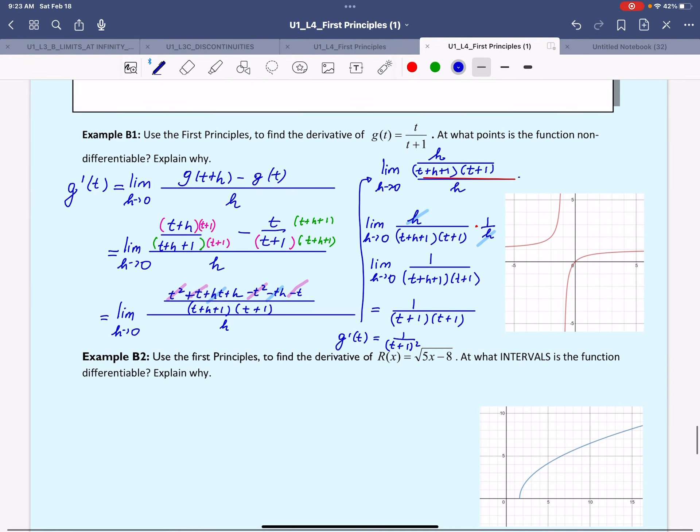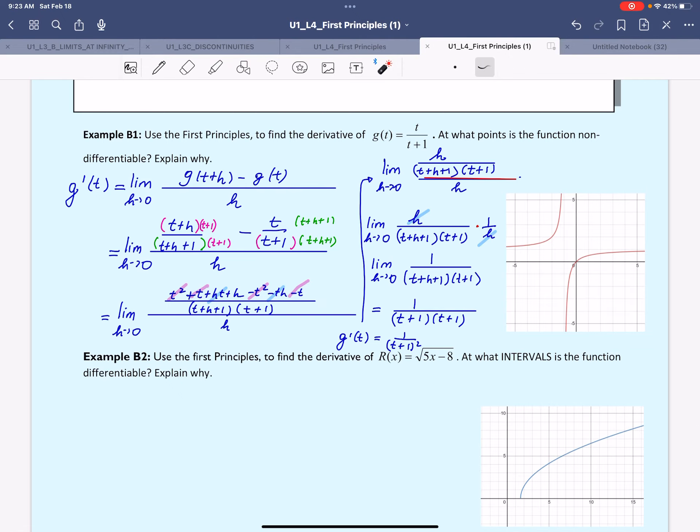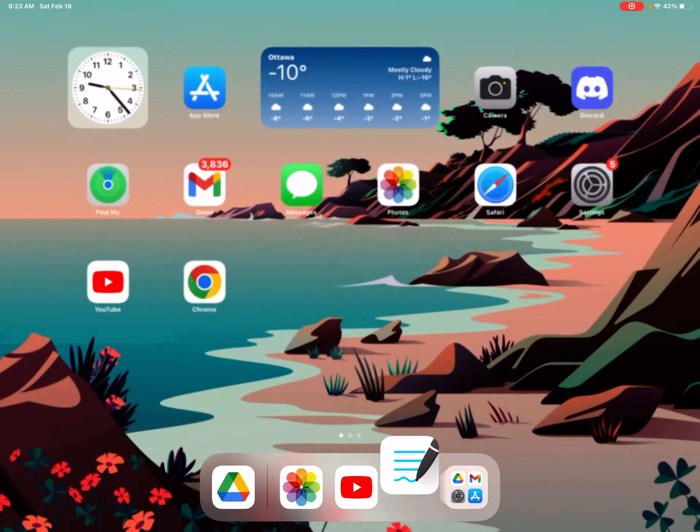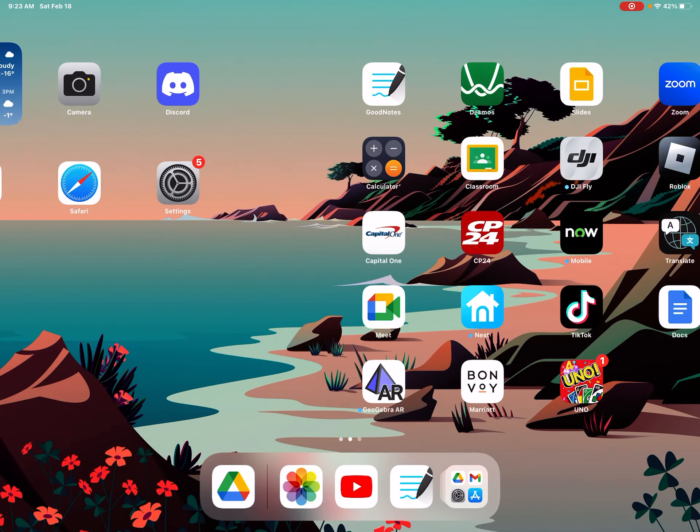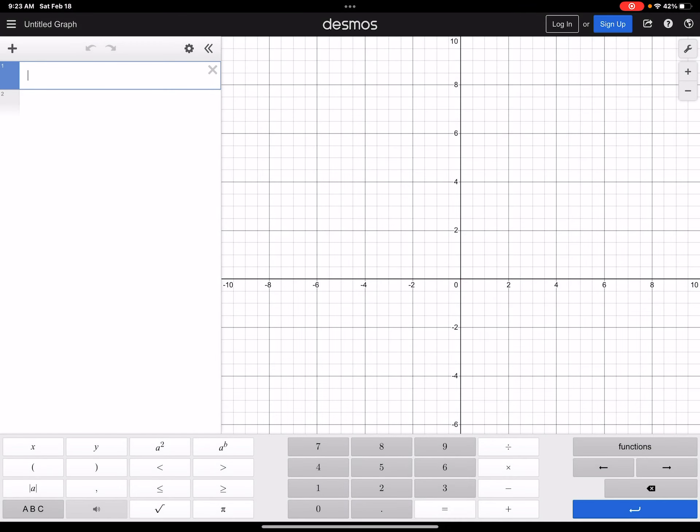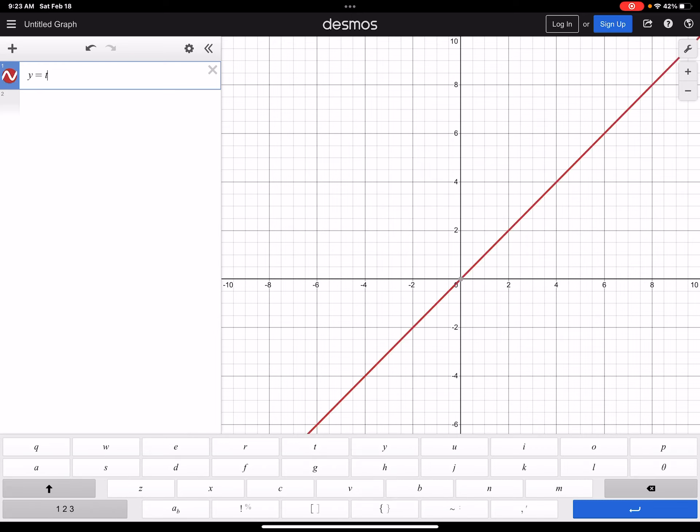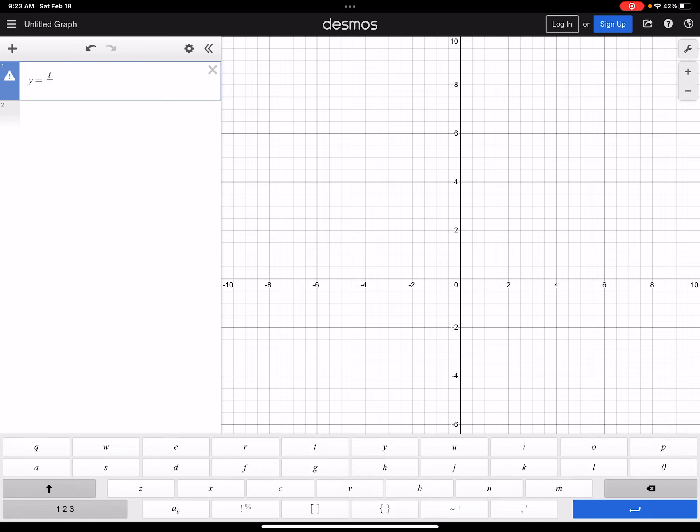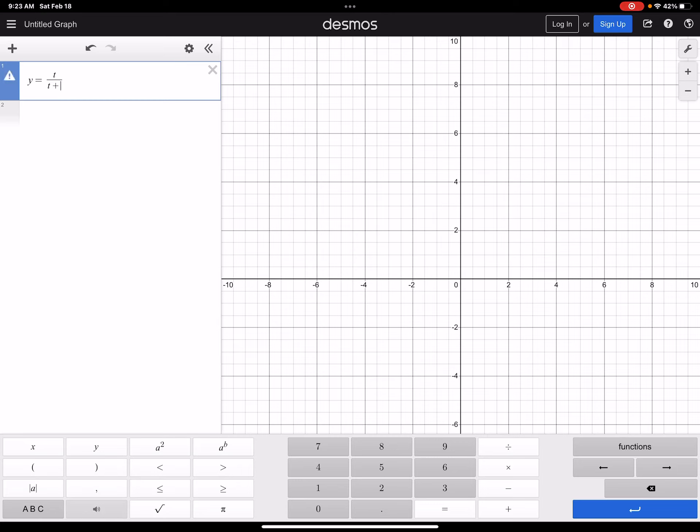We'll talk about this derivative, whether or not it's defined for any real number. The first thing I did was draw the graph of the function itself. We're going to write t/(t+1). As you can see, this is the graph of the function t/(t+1).